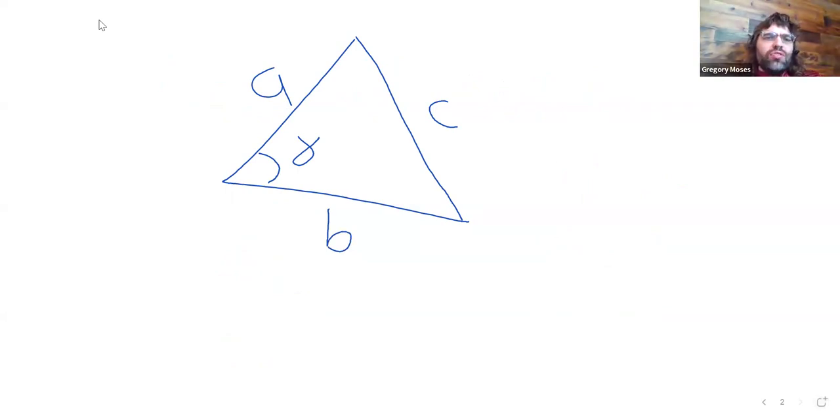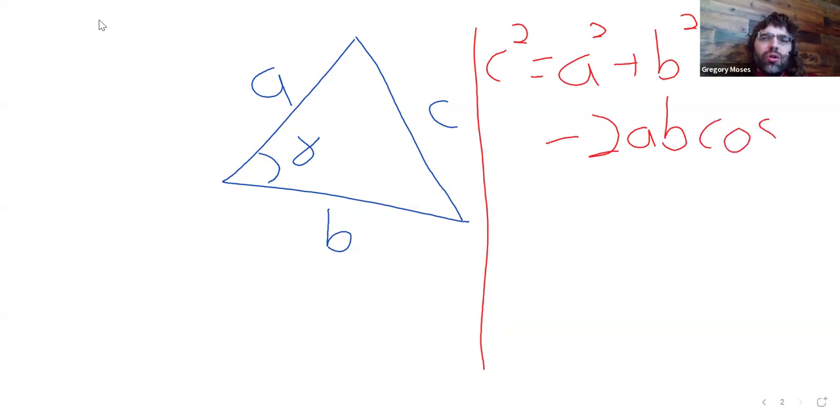The law of cosines is going to look kind of familiar to you, because it starts out as the Pythagorean theorem. C squared equals A squared plus B squared. But then it's going to continue minus 2 times A times B times the cosine of gamma.